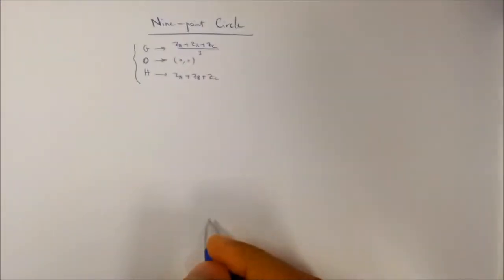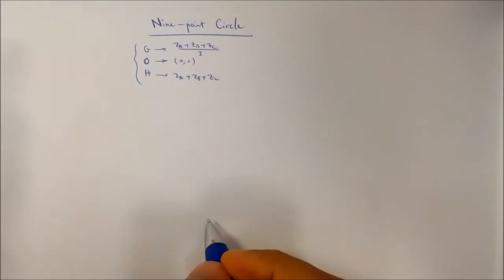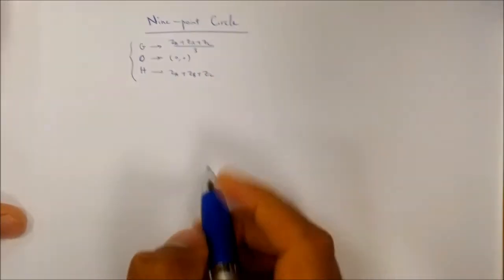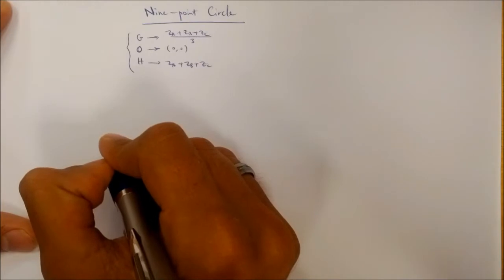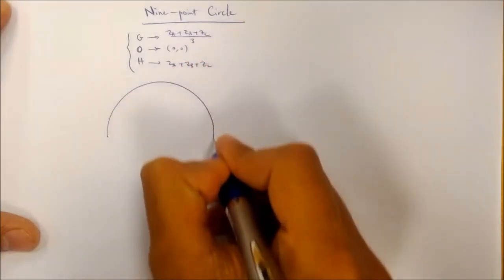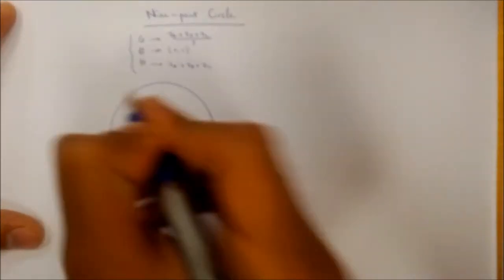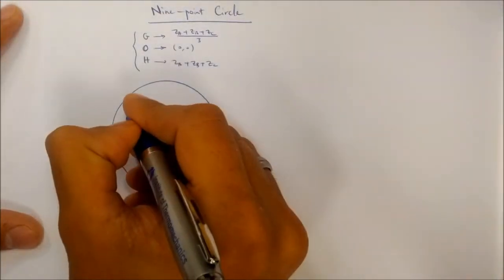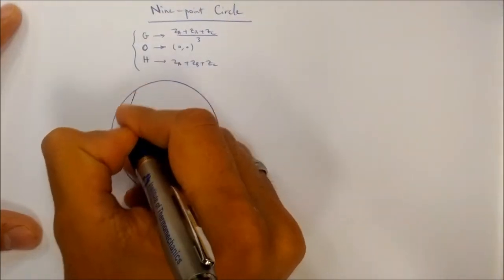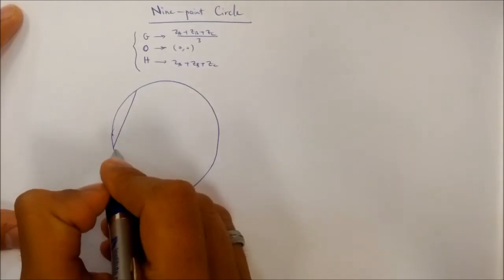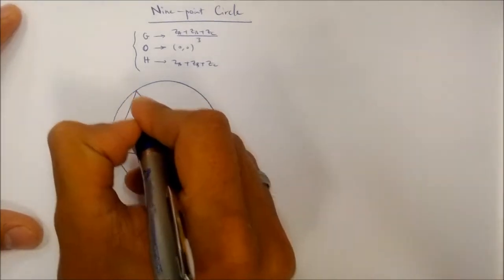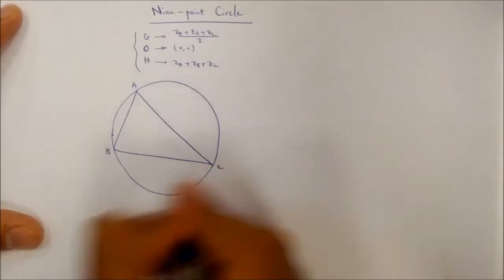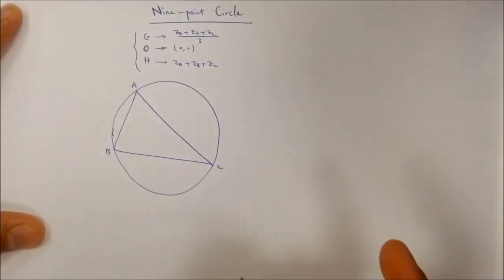Now I can introduce the concept of the nine-point circle of any triangle. If I consider the circumscribed circle of an arbitrary triangle ABC, I'll consider nine points.